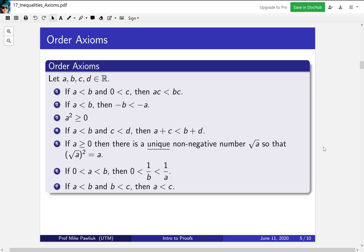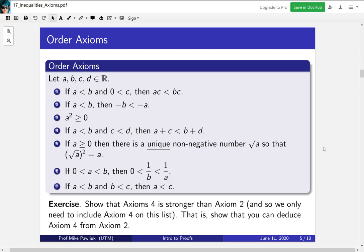Now what we're going to do is take these order axioms and we're going to prove more sophisticated facts than the axioms themselves. Before we continue, you should show that axiom 4 is stronger than axiom 2. So if you wanted to, you could omit axiom 2 from the list and you'd still be able to prove everything you want. So show that if you assume axiom 4, you can prove axiom 2 as a consequence.